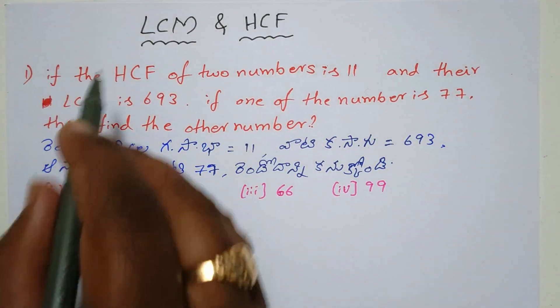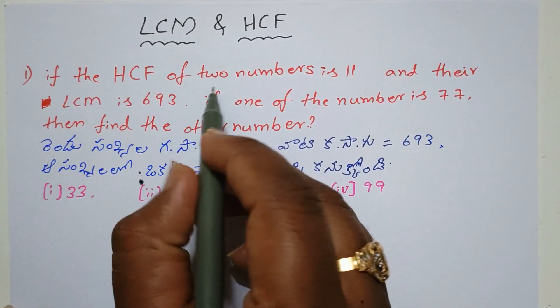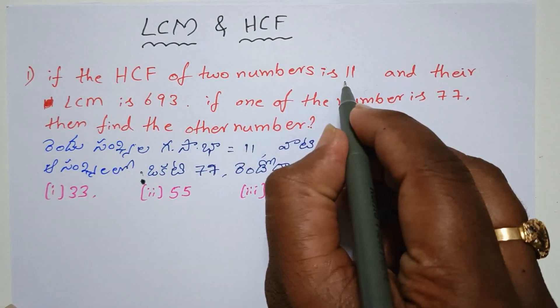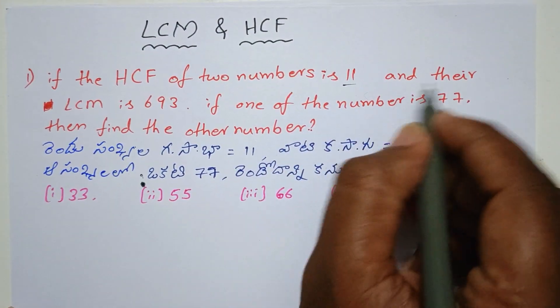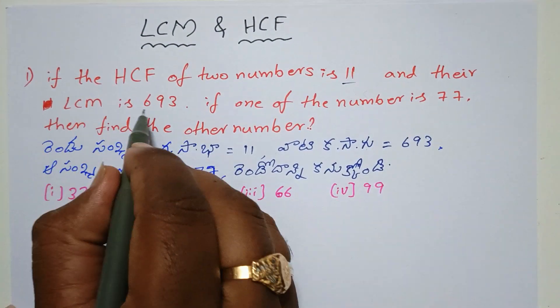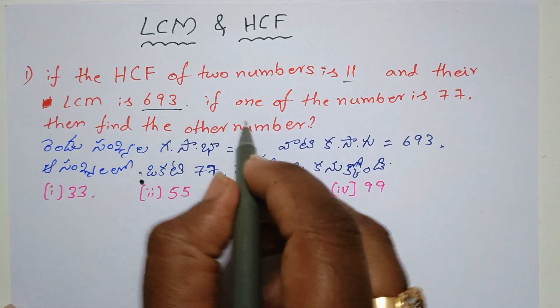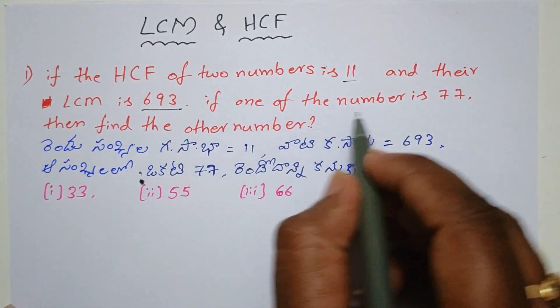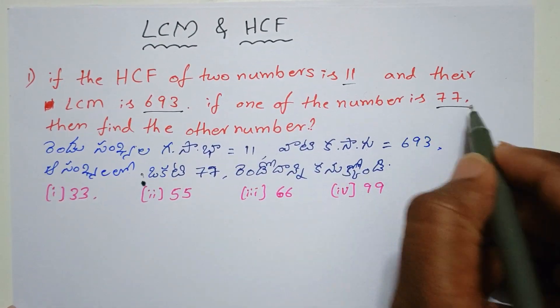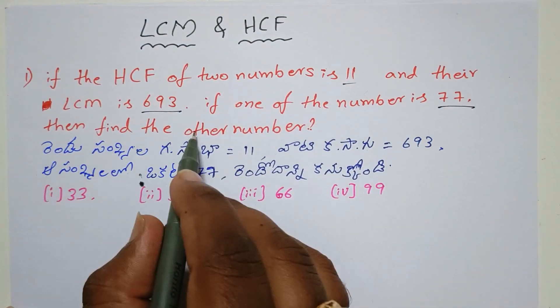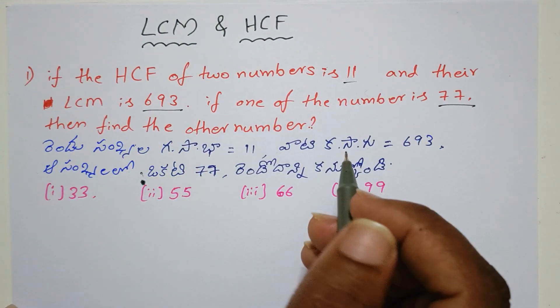First question: If the HCF of two numbers is 11 and their LCM is 693, and if one of the numbers is 77, then find the other number.